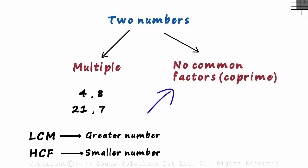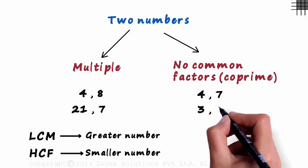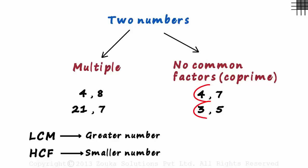What about the second case? An example of two co-prime numbers would be 4 and 7, or 3 and 5. Both these pairs have no common factors except one.